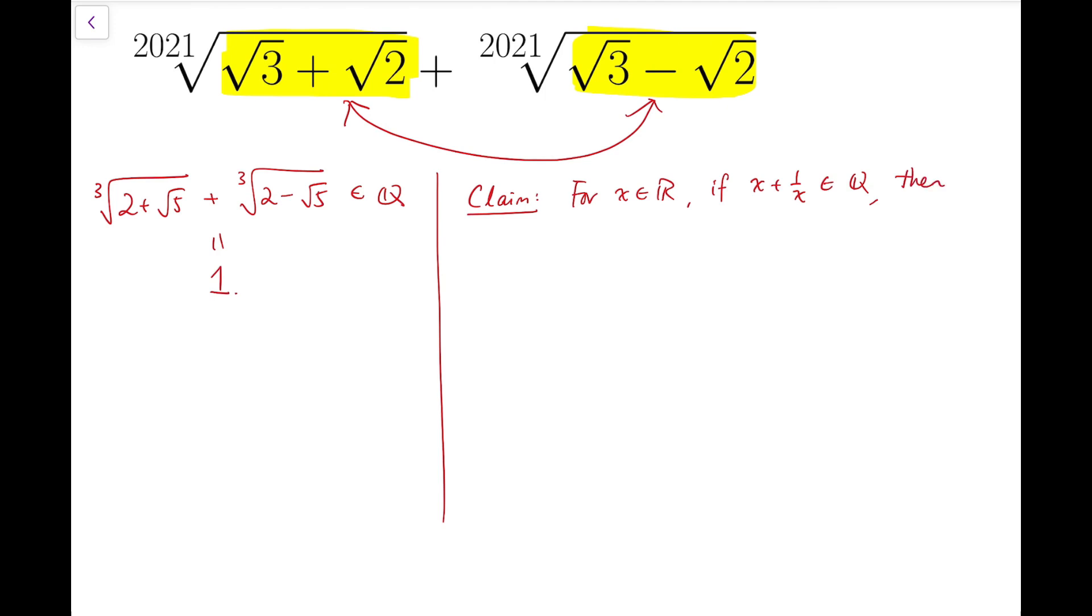Then the claim is, for all natural numbers n, x to the n plus 1 over x to the n is also rational.